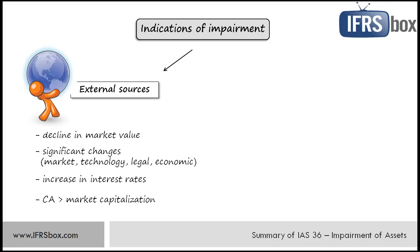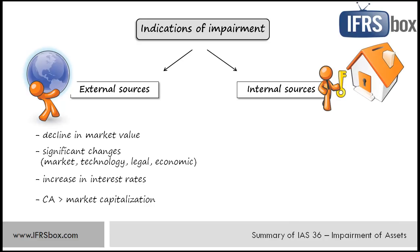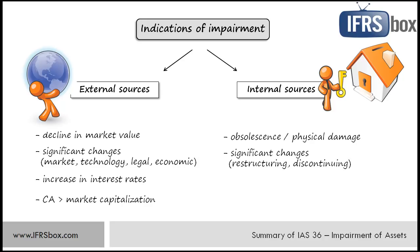There are also certain internal sources of information to look at: obsolescence or physical damage of an asset; significant changes with an adverse effect on the entity but internally initiated — for example plans to discontinue or restructure some operations; and evidence available from internal reporting that indicates the economic performance of an asset is or will be worse than expected. There are also certain indications of impairment in relation to investments in subsidiaries, jointly controlled entities or associates.